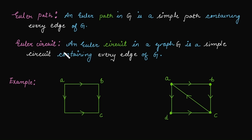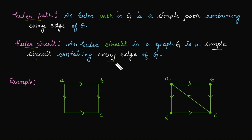An Euler path in a graph G is a simple path that contains every edge of the graph — we need to cover each and every edge but exactly once. If we can do that, the path is categorized as an Euler path. A similar concept is an Euler circuit. The difference is: if the endpoints of that path are different, it is called an Euler path; if the endpoints are the same, it is called an Euler circuit.